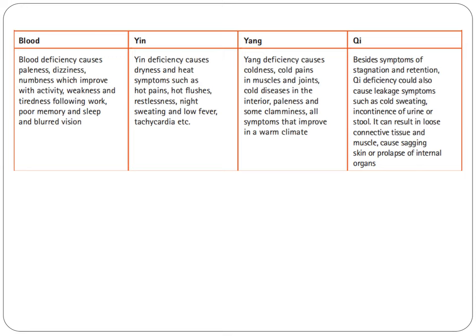With qi deficiency, besides symptoms of stagnation and retention, qi deficiency can also cause leakage symptoms such as cold sweating, incontinence of urine or stool. It can also result in loose connective tissue and muscle causing sagging skin or prolapse of internal organs.